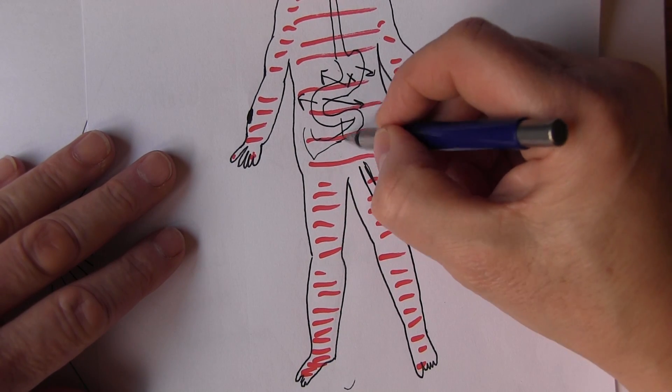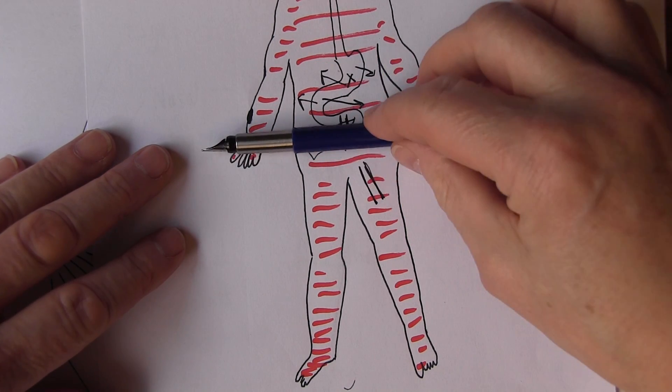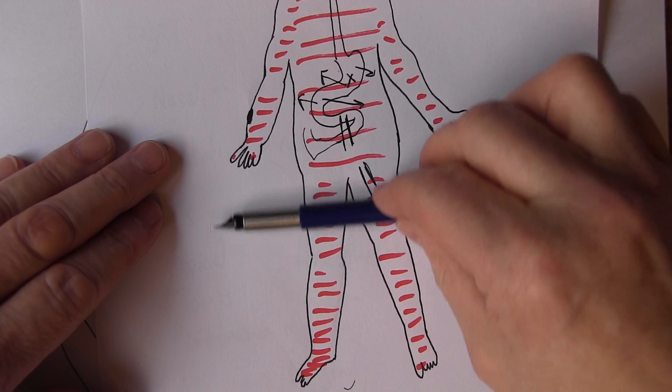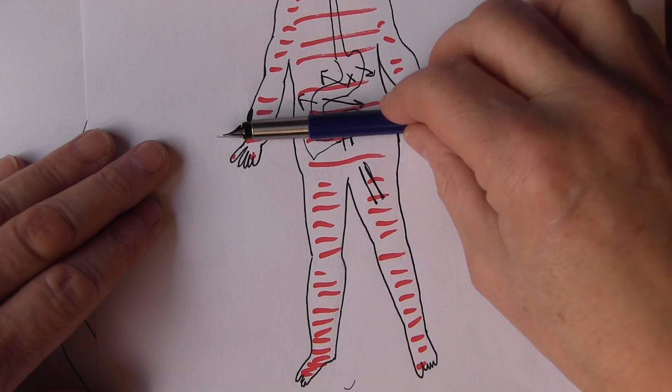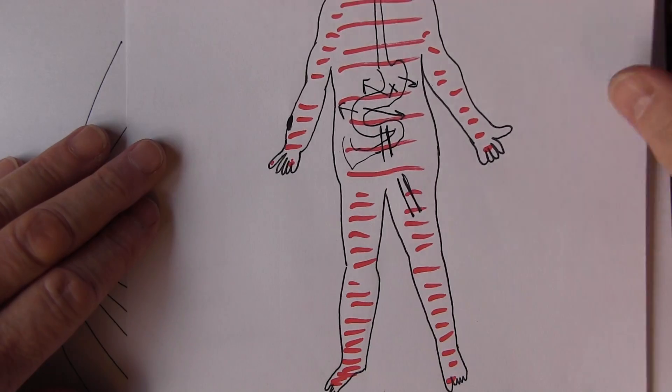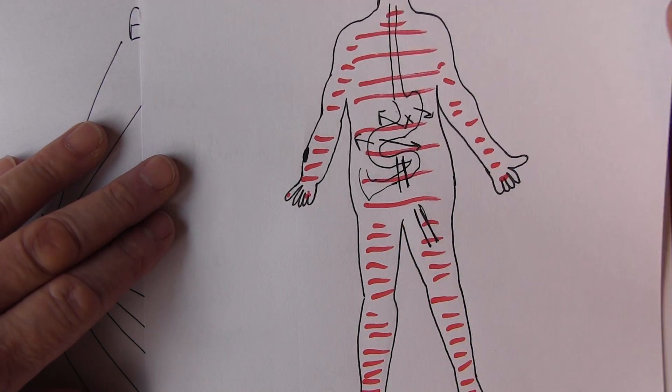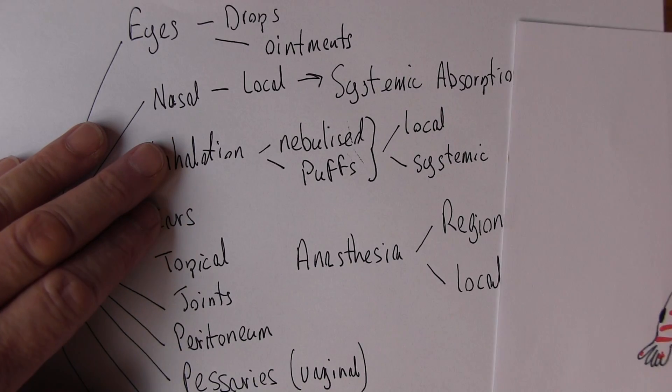Or sometimes we might give epidurals or intrathecal preparations into the spinal cord, and that would anesthetize the bottom half of the body, which is often highly desirable. Other times we just want to suture up a cut, so we just give a little bit of local anesthesia into the area so we can close up a small wound.